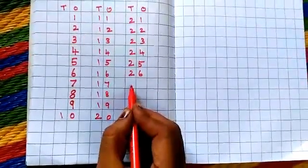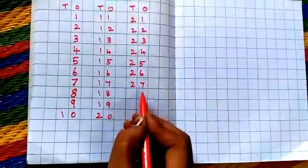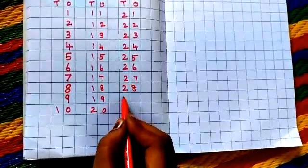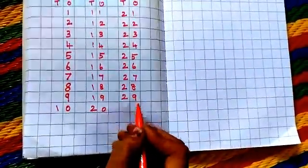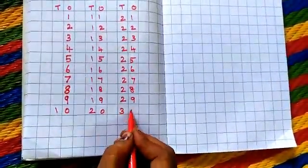2, 6, 26. 2, 7, 27. 2, 8, 28. 2, 9, 29. 3, 0, 30.